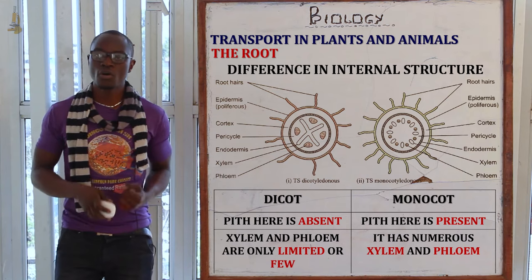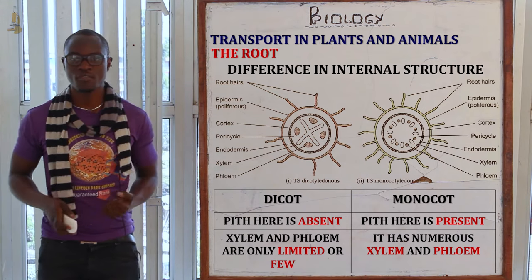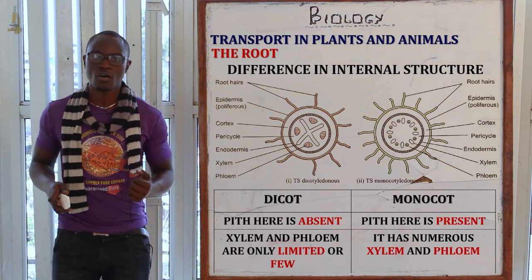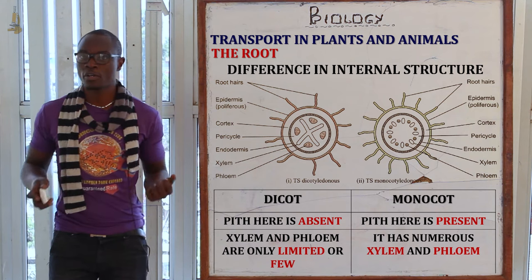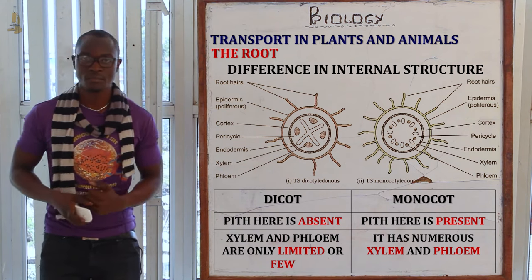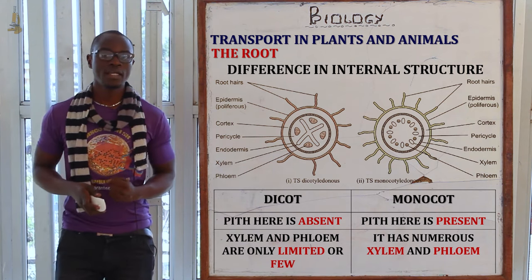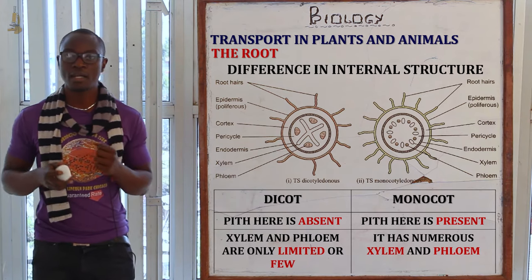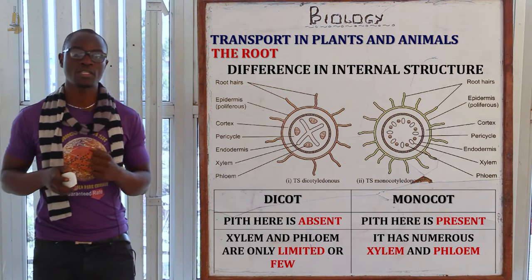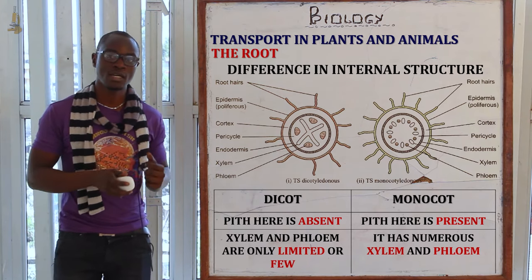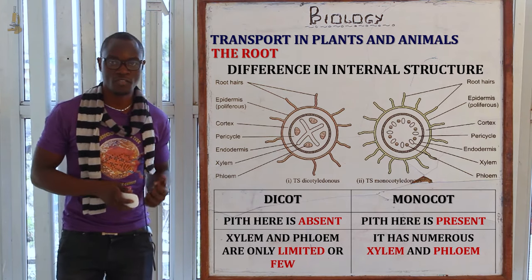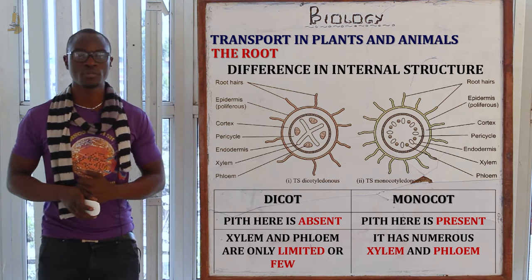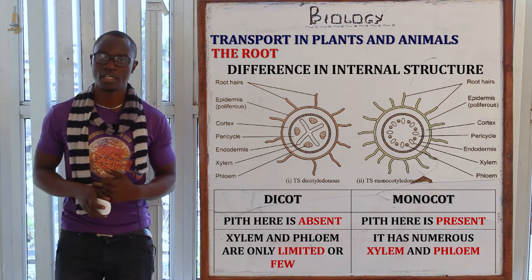In the monocot root, the xylem and the phloem are numerous, while in the dicot root the xylem and phloem are limited. In the dicot root, xylem is located at the center of the plant while phloem surrounds the xylem, making it very much limited.